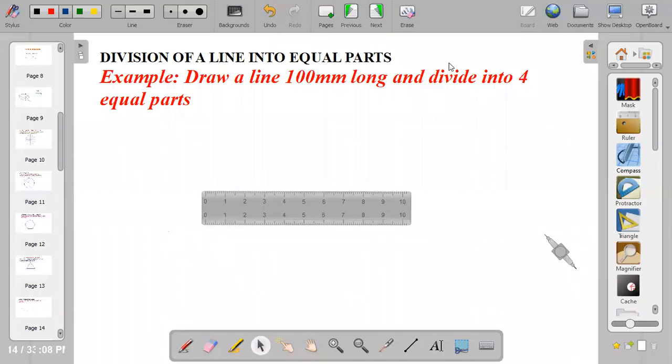Welcome guys to my channel. Today we'll be looking at how to divide a given line into equal parts. So the question says draw a line 100mm long and divide into four equal parts.